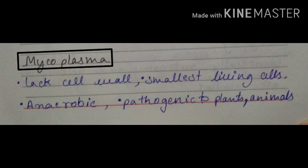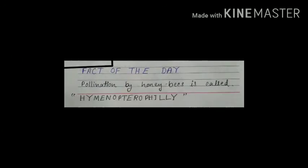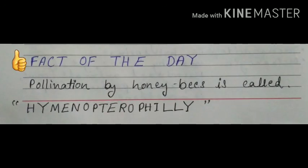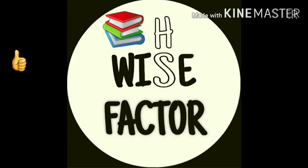That was all about Kingdom Monera included in the NCERT textbook. Now let us move on to the fact of the day. Pollination by honeybees is called hymenopterophily — when flowering plants are pollinated with the help of honeybees, it is called hymenopterophily, which is easy to remember using the letter H. Hymenoptera is actually a large order of Insecta which includes honeybees. That was all for today's topic.